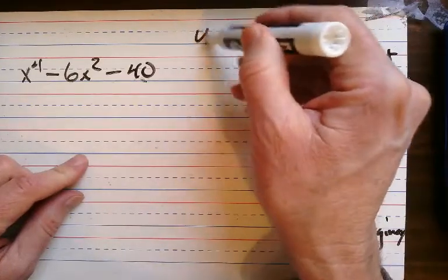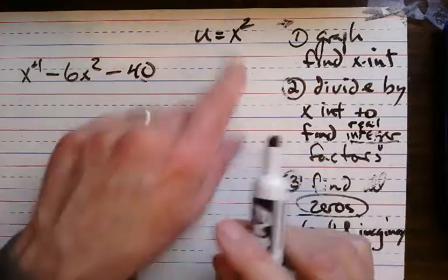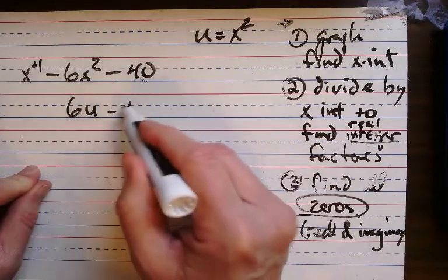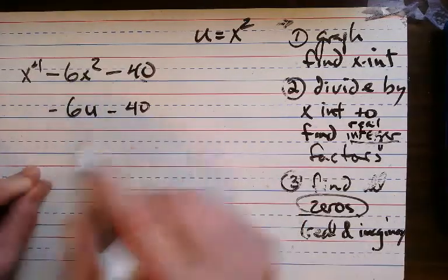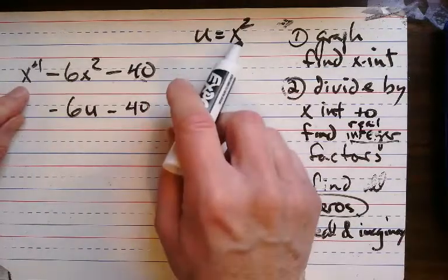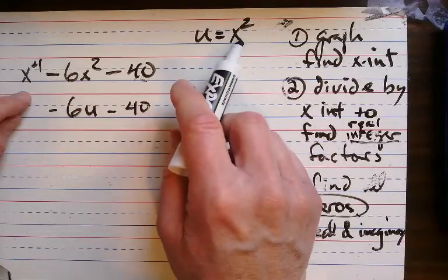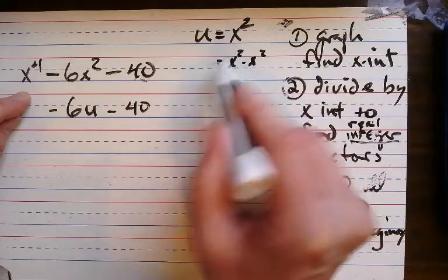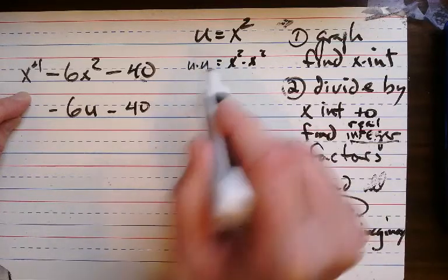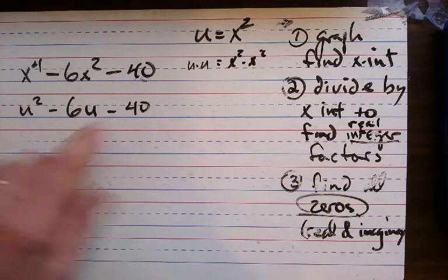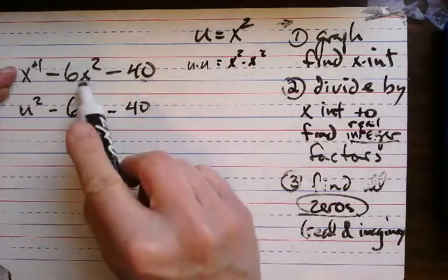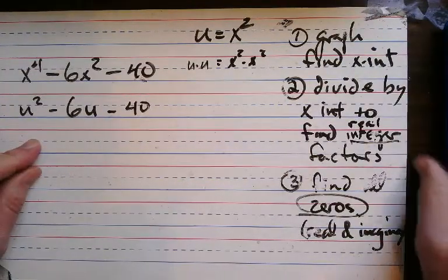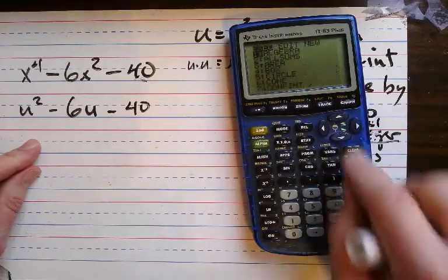What we're going to do is let u equal x squared. So everywhere there's an x squared, we're going to put a u. Why? Because x squared times x squared is x to the fourth. So if we say x squared times x squared, that's u times u, which is u squared. So if I replace x squared with u, then this is really u squared — and it fits in the quadratic formula. That's why.